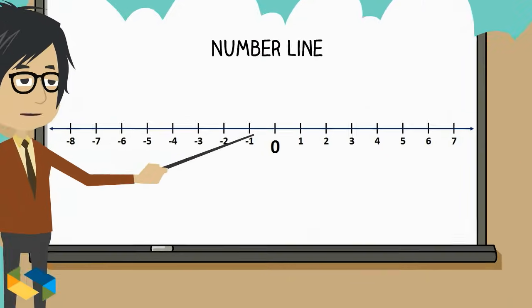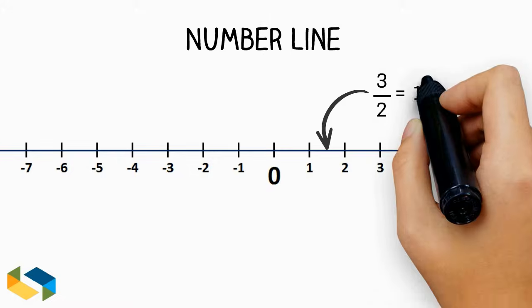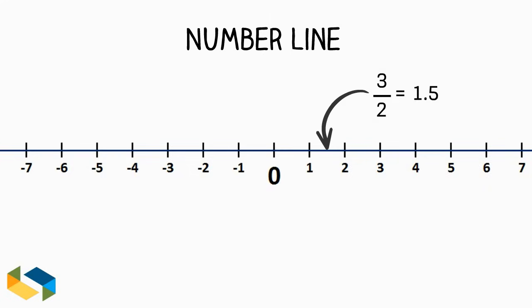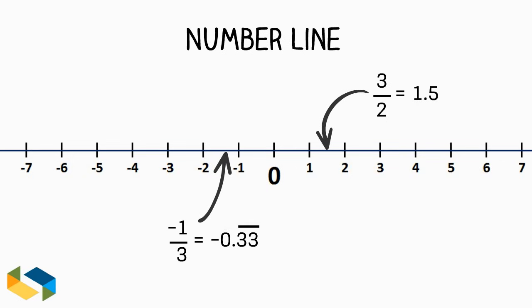Here are some examples of real numbers on the number line. We have 3 upon 2, which is 1.5. Minus 1 upon 3, which is 0.3333, just keep repeating the decimal digits. The number 6. 18 by 5. Etc.